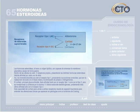Las hormonas esteroideas, al tener un origen lipídico, son capaces de atravesar la membrana plasmática celular de forma pasiva. Dentro de las células se unen a dos receptores propios, presentando las distintas hormonas esteroideas distinta afinidad por cada uno de ellos. Así, los mineralocorticoides se unen al receptor tipo 1, produciendo sus acciones conocidas: la reabsorción de sodio en el túbulo distal y la eliminación de potasio e hidrogeniones.